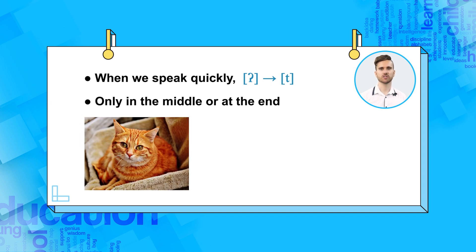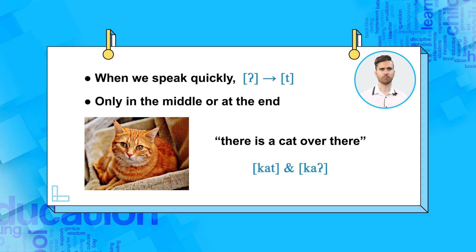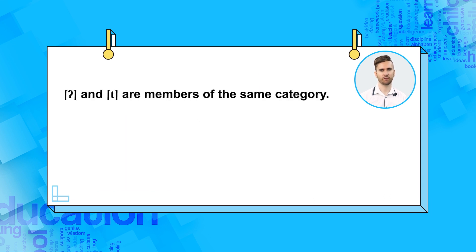In the following example, the T in 'cat' can become the glottal plosive: 'There is a cat over there.' Most of the time, we say 'cat', but we might sometimes say 'cat' with a glottal plosive: 'There is a cat over there.' Nevertheless, both the speaker and the listener know that the glottal plosive version is simply one of the possible ways to say 'cat'. Therefore, both the glottal plosive and T are members of the same category, but only one of these sounds can be selected as the head of the category.